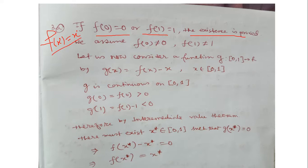If f(0) = 0 or f(1) = 1, the existence is proved. Now we have to assume the case when f(0) ≠ 0 and f(1) ≠ 1 — what will happen then? We still need to find x* such that f(x*) = x*. Let us consider a new function g, introduced here.